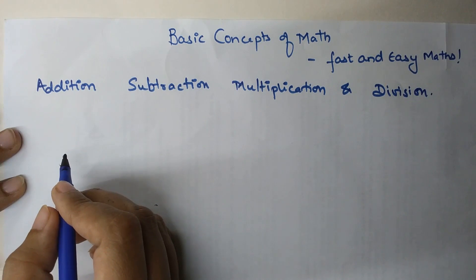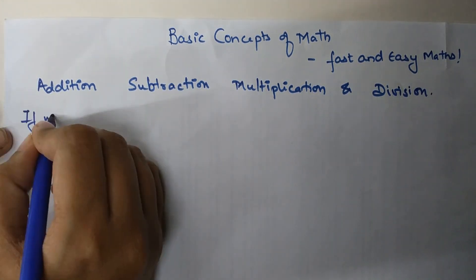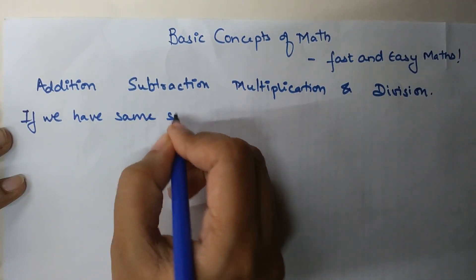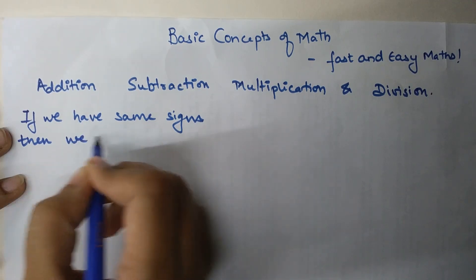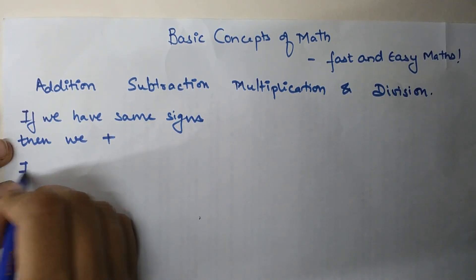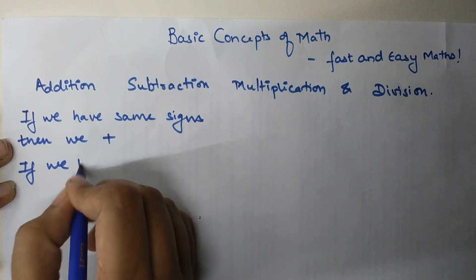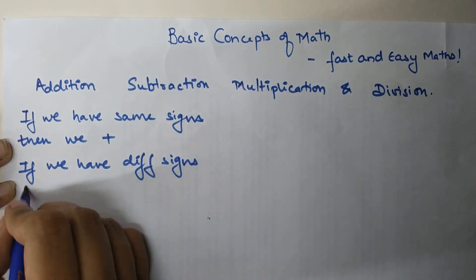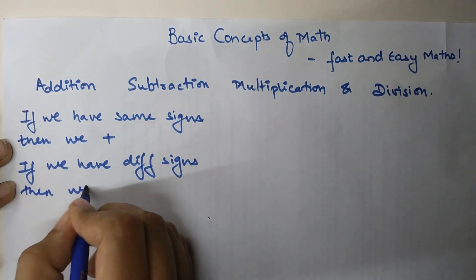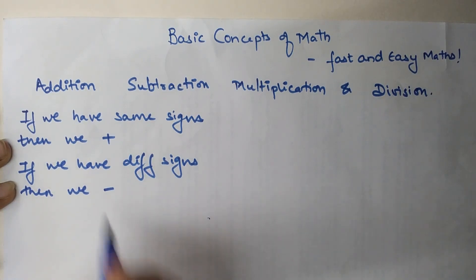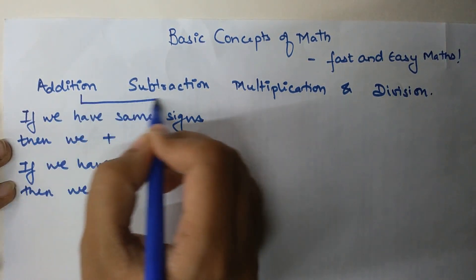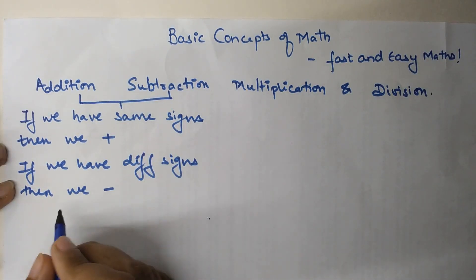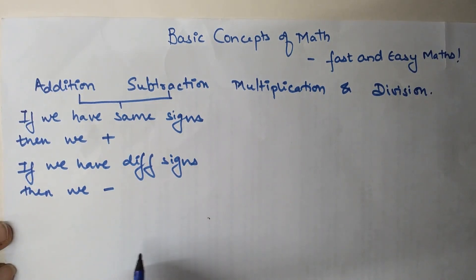So let's first write down the rules of addition and subtraction. If we have the same sign, then we add. If we have different signs, then we subtract. These are the rules for addition and subtraction.